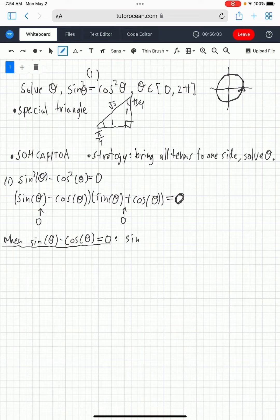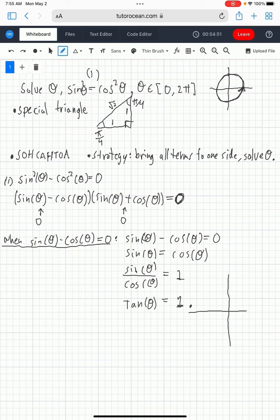So if the first term is 0, then you know that sine theta minus cos theta is equal to 0. You can determine that sine theta is equal to cos theta, which is only true when sine theta over cos theta is equal to 1, which is by definition when tan theta is equal to 1.